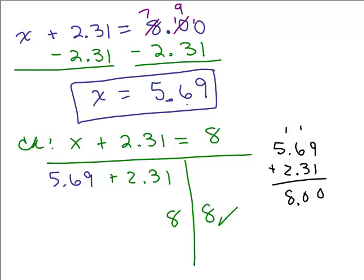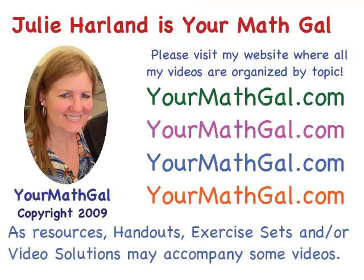So this is the correct solution, x equals 5.69. And so if we want to write that using a solution set, we put the 5.69 in the braces. This is Your Math Gal, Julie Harland. Please visit my website at yourmathgal.com where all of my videos are organized by topic.